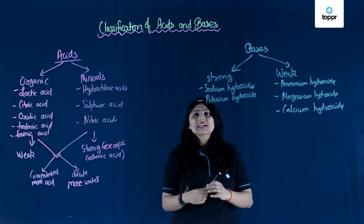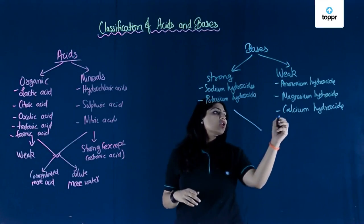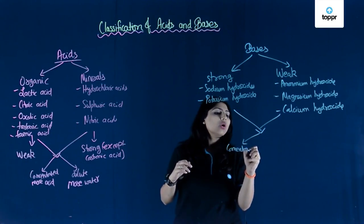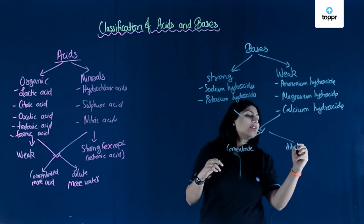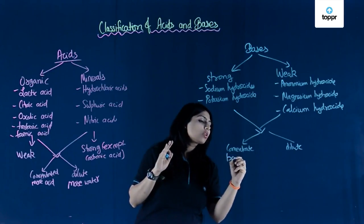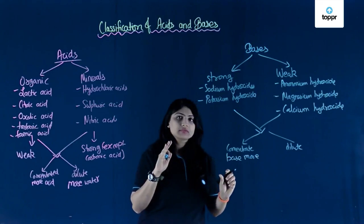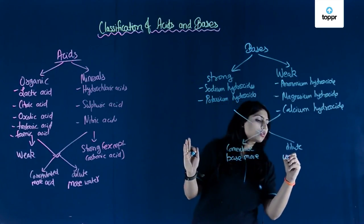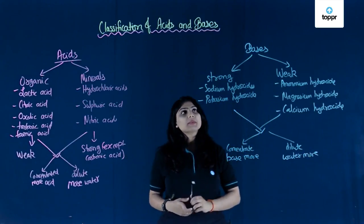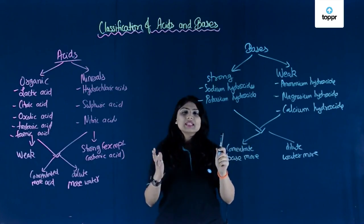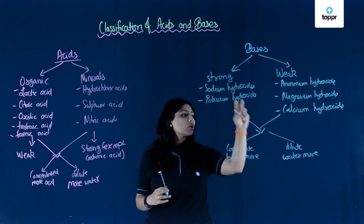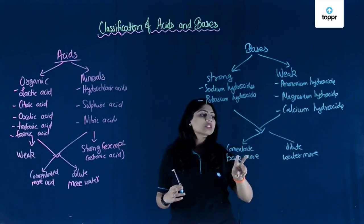These are the examples of strong and weak bases. Remember, strong or weak bases can either be concentrated or dilute. A concentrated base is one where base is more and water is less. A dilute base is one where water is more and base is less. So sodium hydroxide, for example, can be used as concentrated or dilute — this is the basic classification of acids and bases.